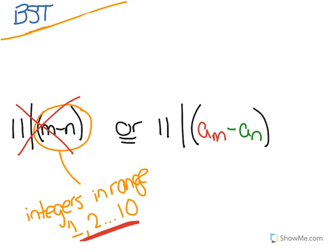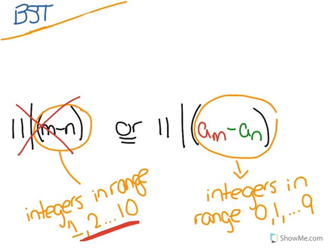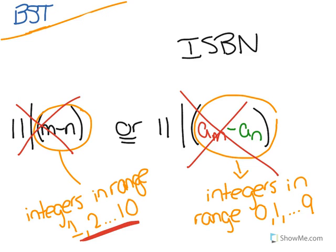And we know that A sub M and A sub N are integers in the range of 0 through 9, because A sub M and A sub N are just digits in those ISBNs that we were talking about. And a single digit in an ISBN number is either going to be 0 through 9. It won't be a double digit. So then, we also see that 11 cannot divide A sub M minus A sub N, because there's no subtraction that could take place between this range of integers that would produce a number divisible by 11.